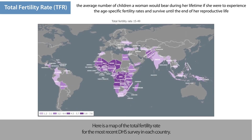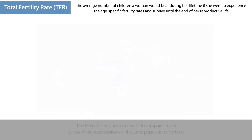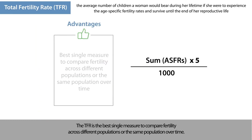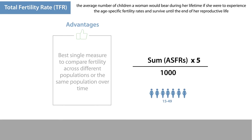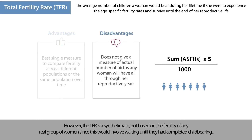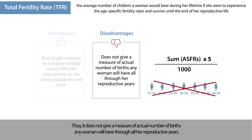Here is a map of the total fertility rate for the most recent DHS survey in each country. The TFR is the best single measure to compare fertility across different populations or the same population over time. However, the TFR is a synthetic rate, not based on the fertility of any real group of women, since this would involve waiting until they had completed childbearing. Thus, it does not give a measure of the actual number of births any woman will have through all her reproductive years.